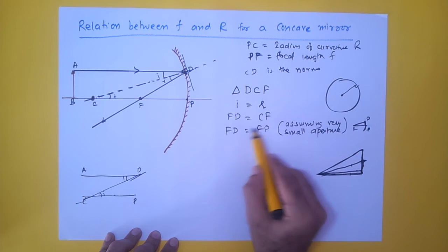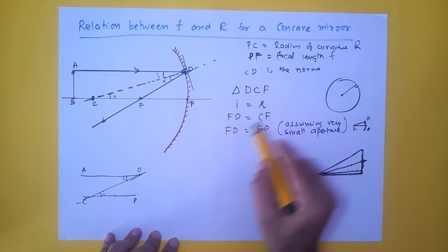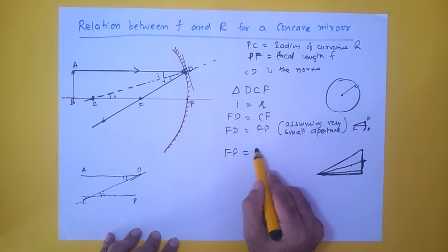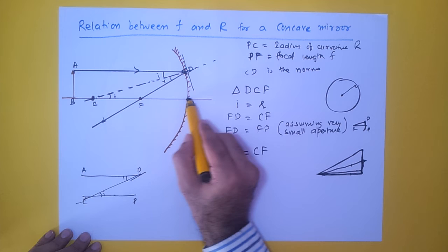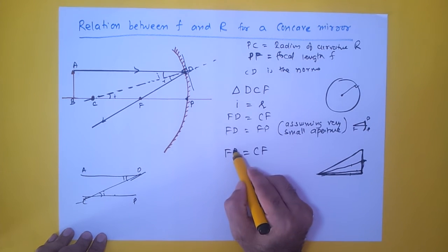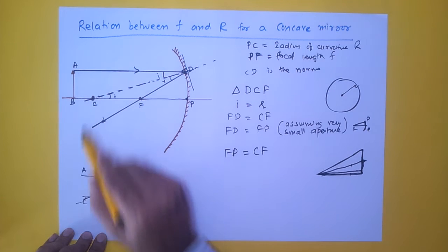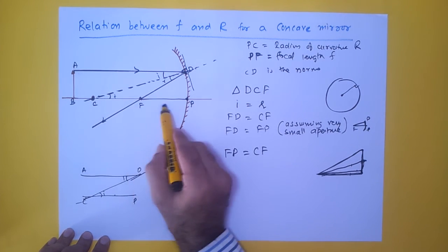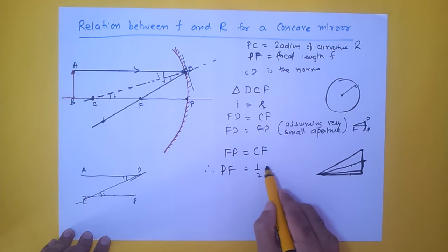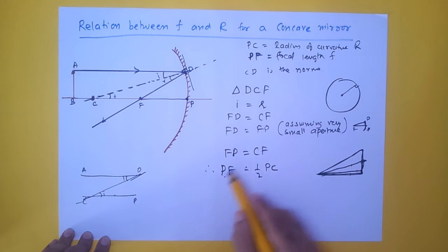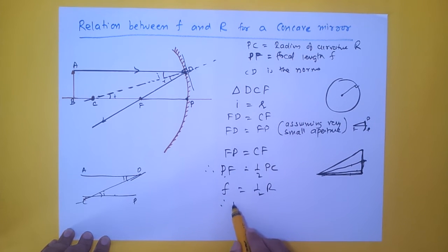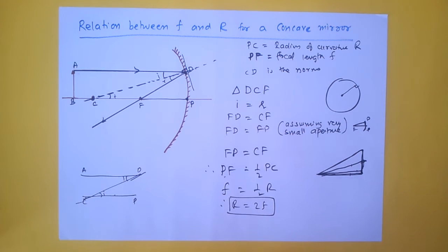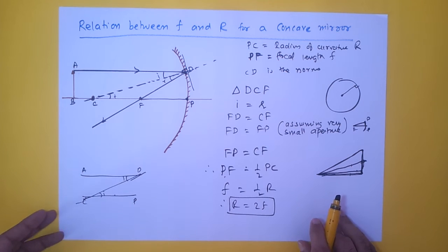Since FD = FP, we can substitute FP for FD in the equation FD = CF. This gives FP = CF, meaning F is the midpoint of PC. Therefore PF = half of PC, i.e., F = R/2, which gives R = 2F. This is the key result: for a concave mirror, the focal length is half the radius of curvature.